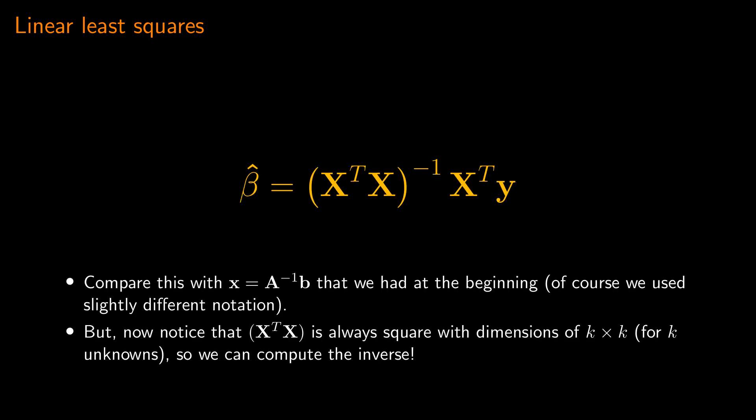That is the key result. Without making any assumptions at all about our data or system of linear equations, we have arrived at a general expression for the best estimate of beta that fits our model to our data. Compare this with the equation x equals A-inverse·b from before. In that case, we solved for x by finding the inverse of the square matrix A. Now notice that x-transpose·x, as in the linear least squares equation, is always square — meaning we can compute the inverse even for over-determined systems. The one caveat is that we require all rows and columns of x to be linearly independent, i.e., the x matrix must be full rank.